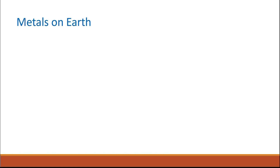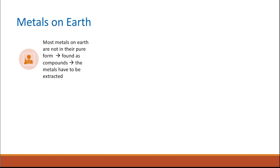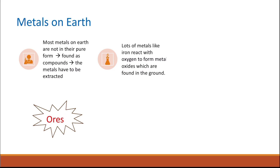So how do we find metals on earth? Most metals on earth are not found in their pure form as they are quite active. They are usually found as compounds, and the metals have to be extracted from these compounds before they can actually be used. Lots of metals like iron will react with oxygen to form metal oxides, and these are found in the ground.